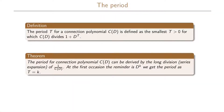Associated with a connection polynomial is something called the period. The period, denoted T, for a connection polynomial C(D) is defined as the smallest T greater than 0 for which the connection polynomial C(D) divides 1 plus D to the T. To find the period, we can use the following theorem: the period for C(D) can be derived by long division — that is, the series expansion of 1 over C(D). At the first occasion the remainder is D to the k, the period T equals k.